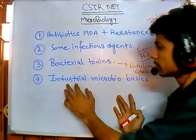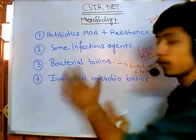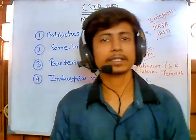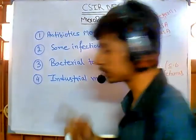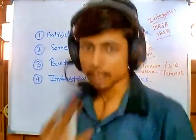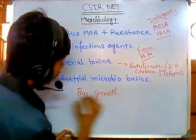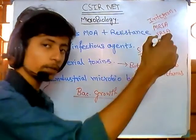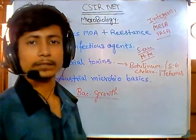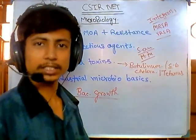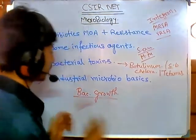Finally, industrial microbiology basics — this is not that critical, but you can learn it. Also important is bacterial growth: the growth curve of bacteria, how they grow, and how to grow them in different culture types like batch culture, fed-batch culture, or continuous culture. Understanding why different culture types are used is also important.